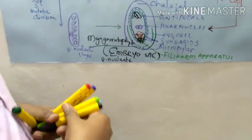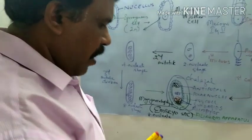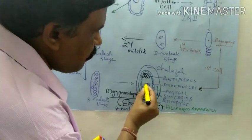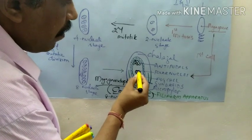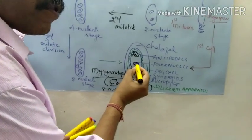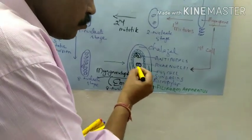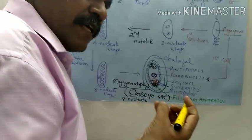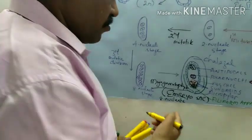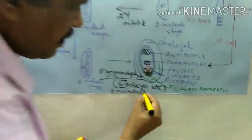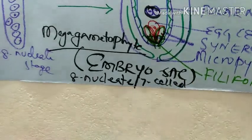And this polar nuclei, prior to the fertilization, what will they do? They will fuse and form one cell. Only two nuclei are there — the two nuclei will fuse. So the total number of cells are now 7 cells. So it is an 8-nucleate, 7-cell embryo sac.